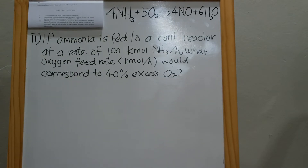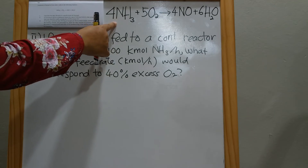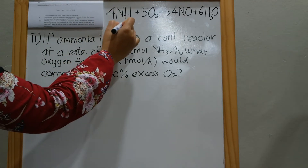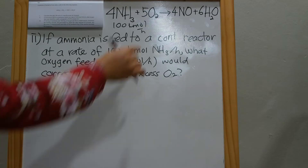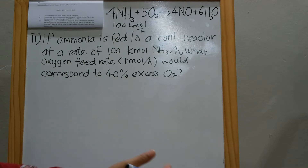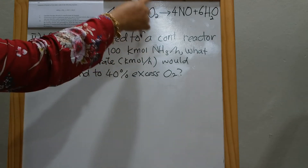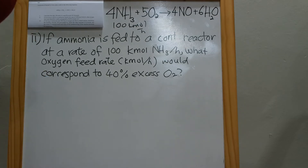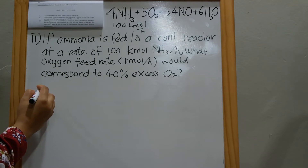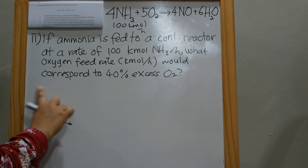The second question asks: if ammonia is fed to a continuous reactor at a rate of 100 kmol per hour, what oxygen feed rate in kmol per hour would correspond to 40 percent excess of O2? This tells us O2 is the excess reactant, in excess by 40 percent. Let's recall our percentage excess equation from the previous video.